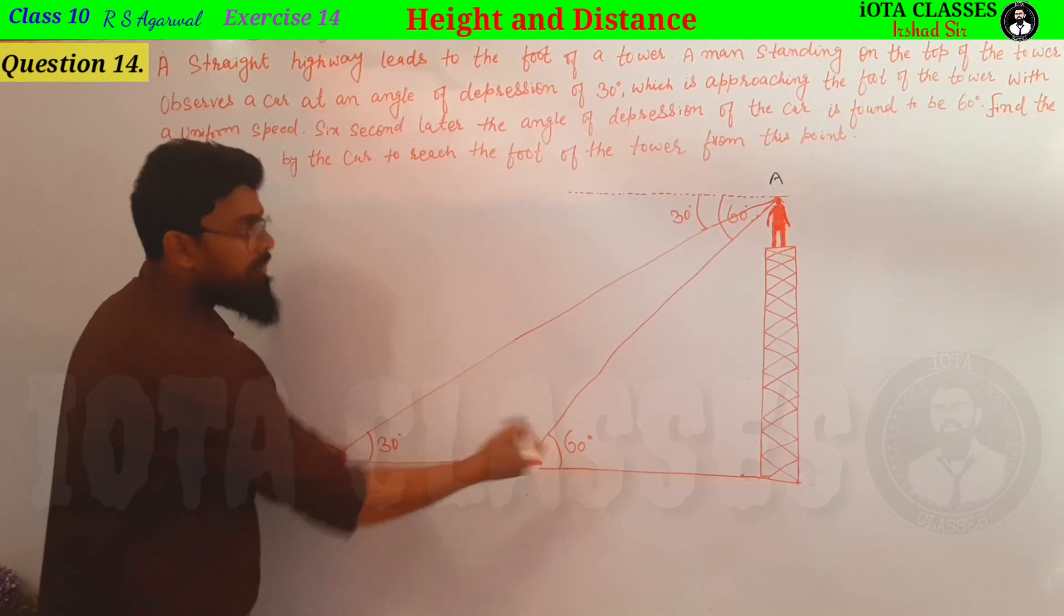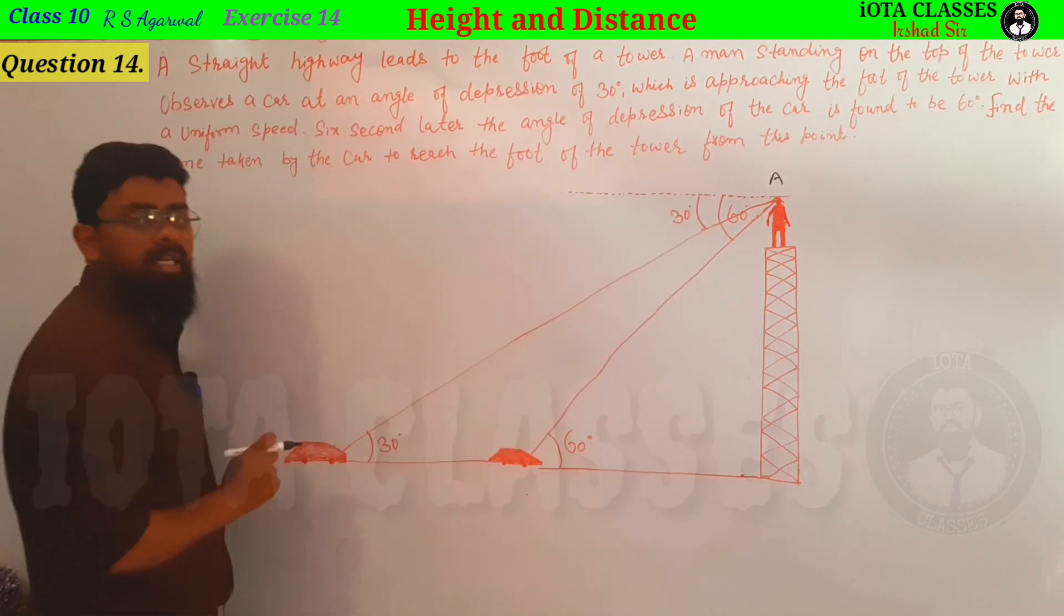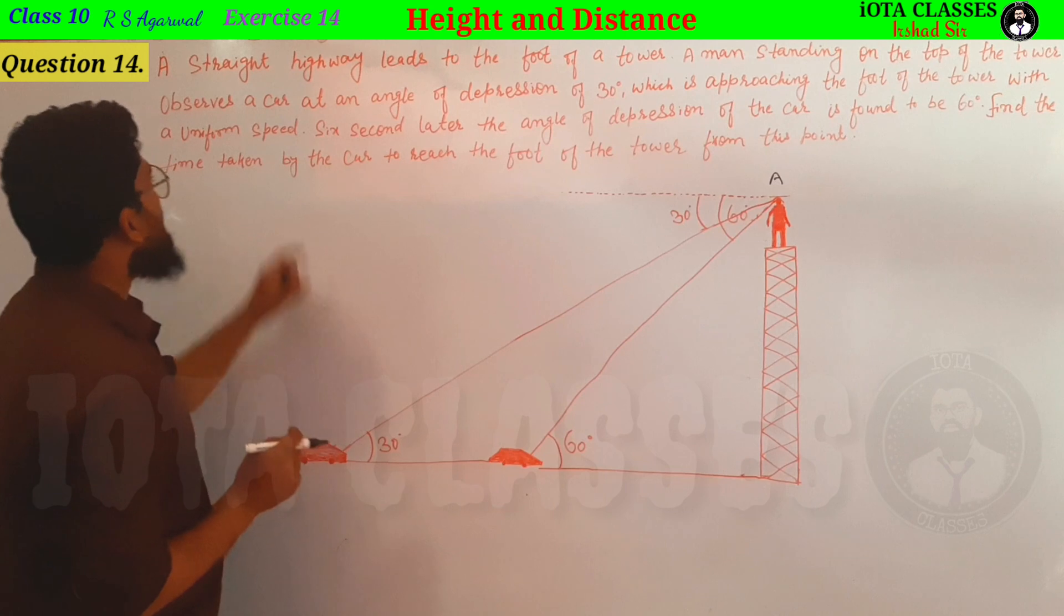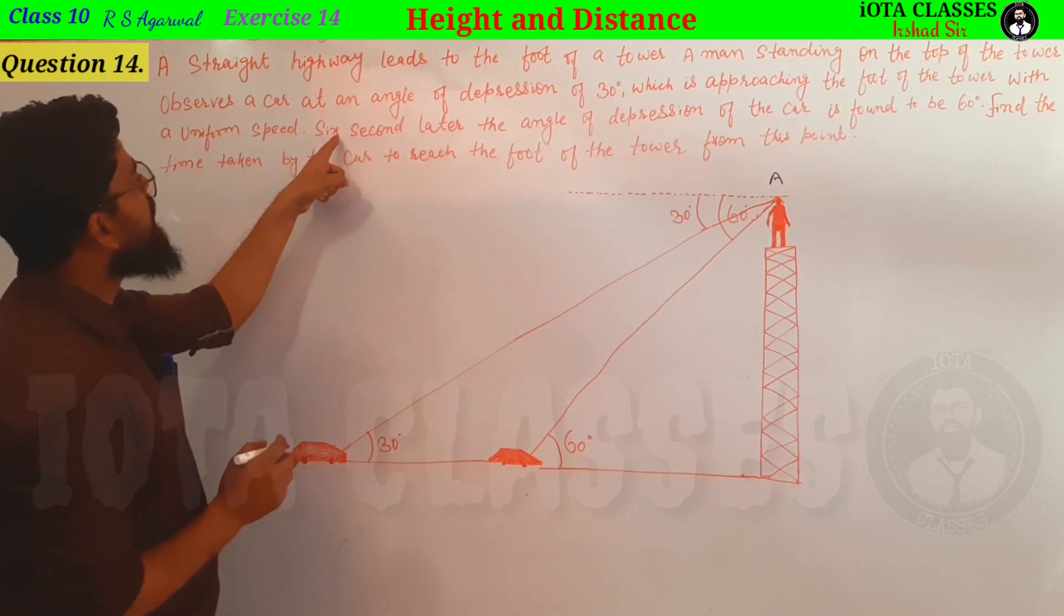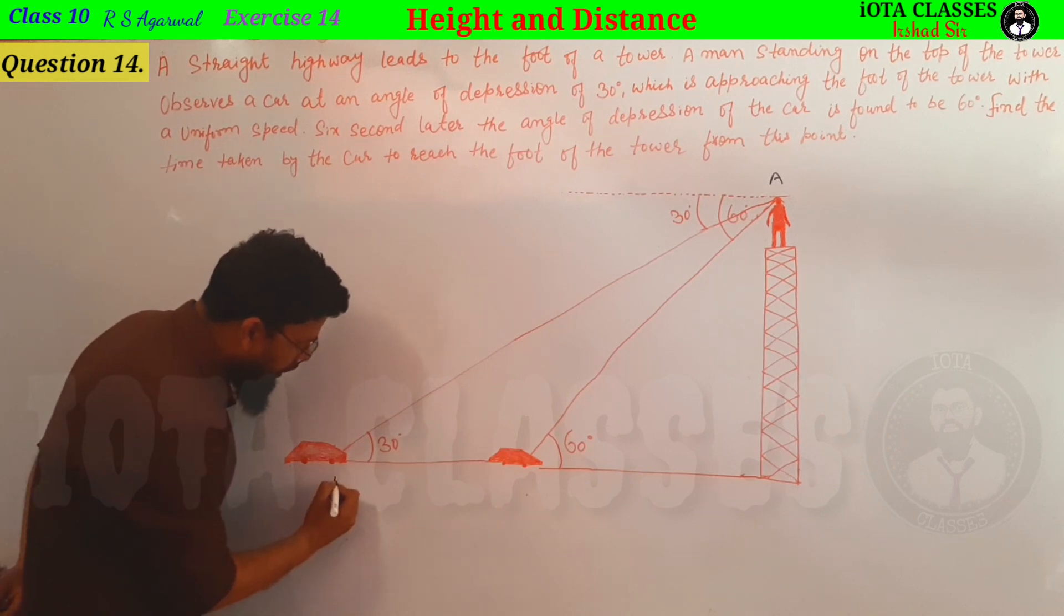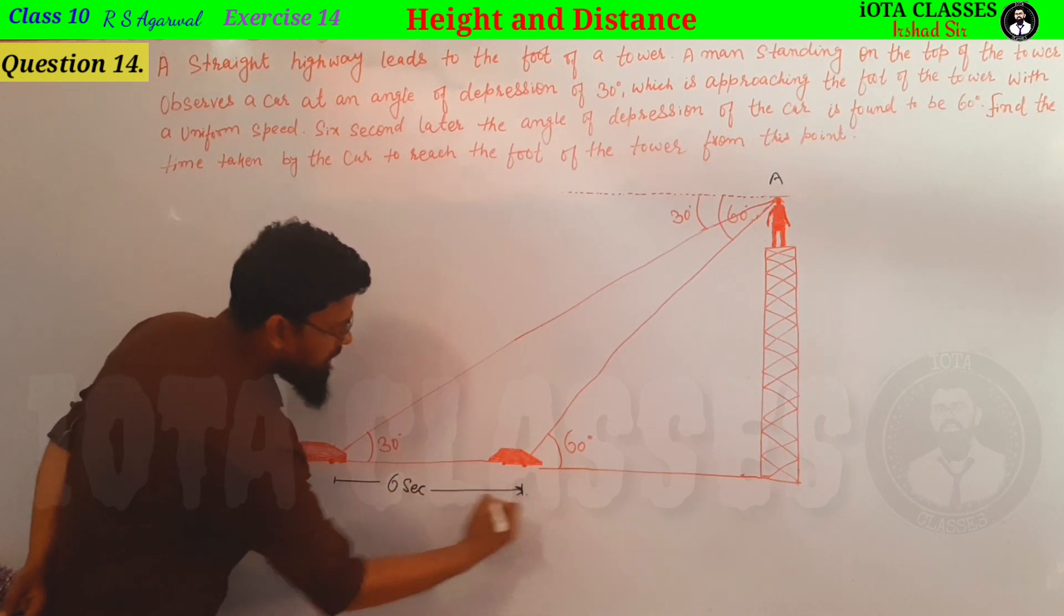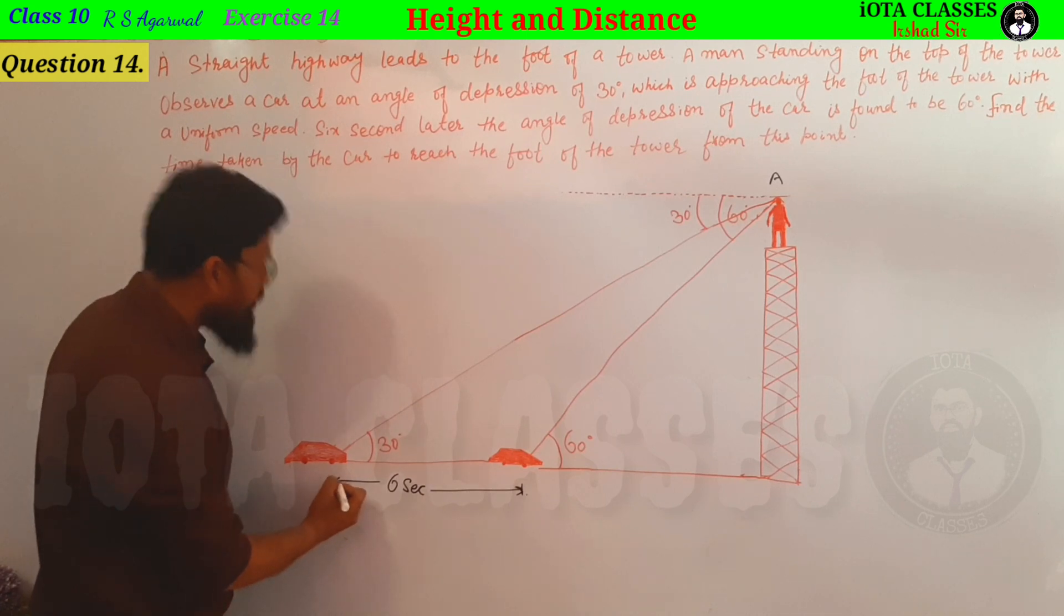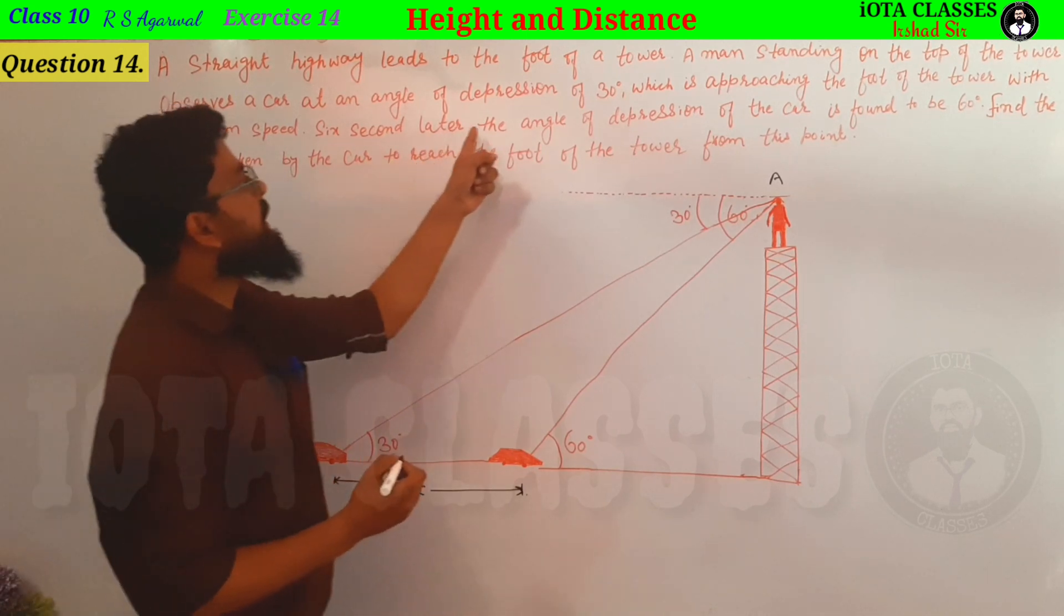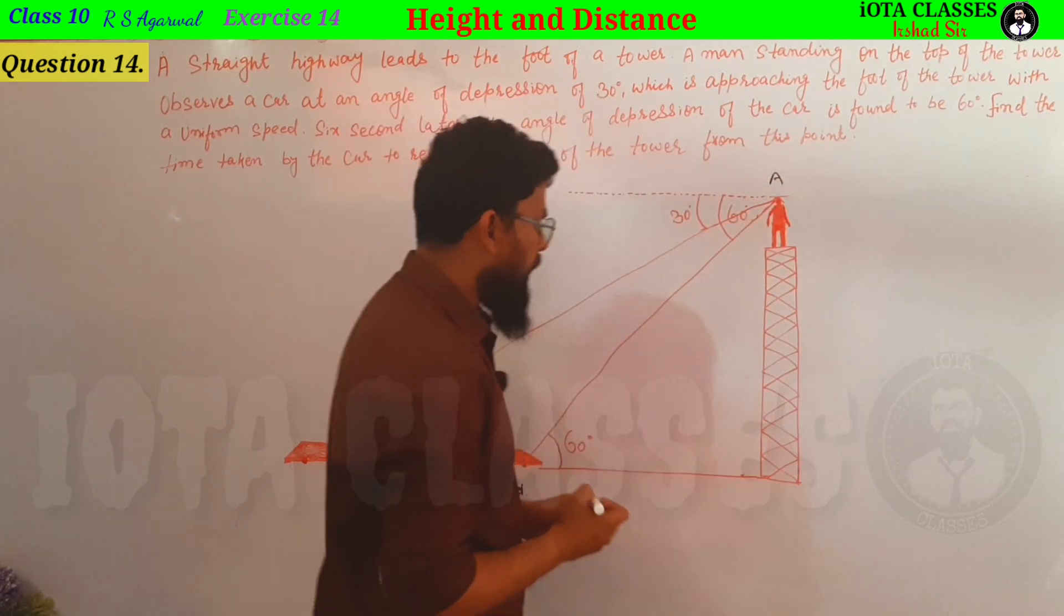So the angle of depression of this car is 30 degrees. Then what is saying? 6 seconds later, 6 seconds after, this car is here to come. This time is 6 seconds. 6 seconds, what happened? 6 seconds later, the angle of depression of the car is found to be 60 degrees.